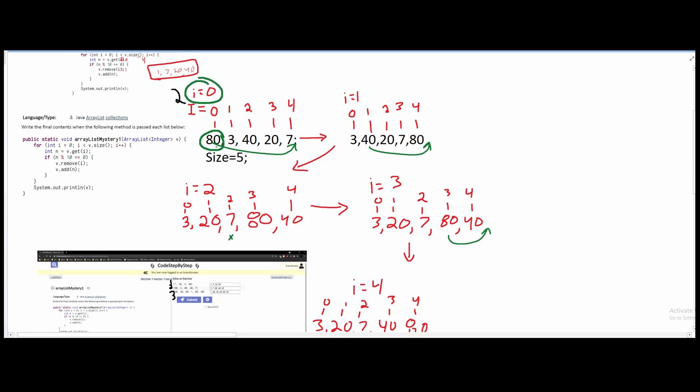And then we look at 80. Since 80 is even, we're moving it to the back, back here behind 7. Now after we do that, we're going to get 3, 40, 20, 70, 80.